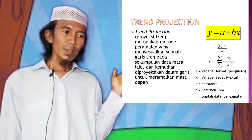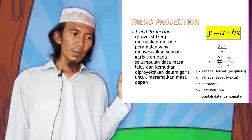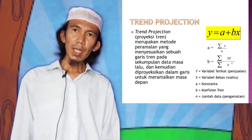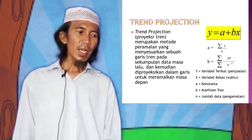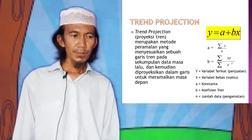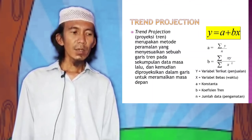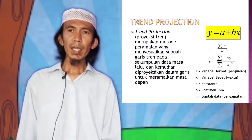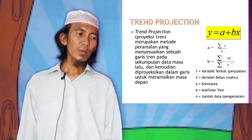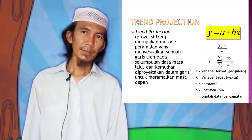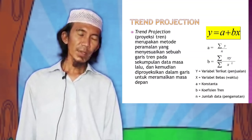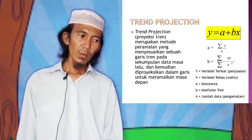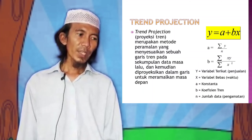Seperti apa? Okay, kalian simak berikut ini. Jadi, trend projection merupakan metode peramalan yang menyesuaikan sebuah garis trend pada masa lalu dan kemudian diproyeksikan dalam garis untuk meramalkan masa yang akan datang. Rumusnya seperti apa? Y sama dengan A plus BX. Y yaitu variabel terkait penjualan. X variabel bebasnya berhubungan dengan waktu. A konstanta. B satuan trend. Dan N jumlah data pengamatan.